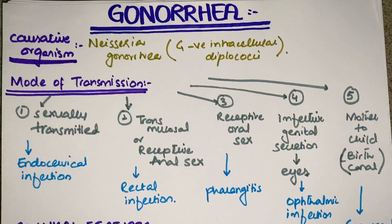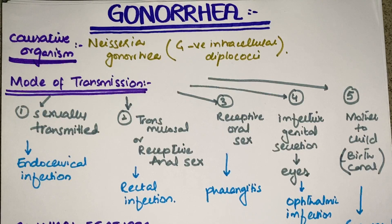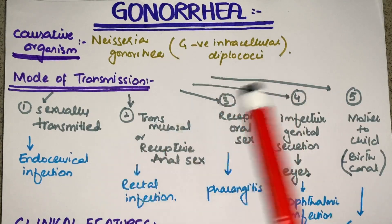Starting our discussion — what is the causative organism? The causative organism of gonorrhea is, from the name, Neisseria gonorrhoeae, which is a gram-negative intracellular diplococcus.